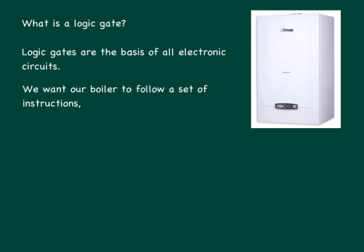For example, we only want it to light if the pilot light is lit and the chimney flue is unblocked. Another set of instructions we might want it to obey are, for example, we want it to come on when a timer tells it to, or when we press the override button, or when the temperature falls below a certain level. The boiler contains circuits that use logic gates to follow these instructions.